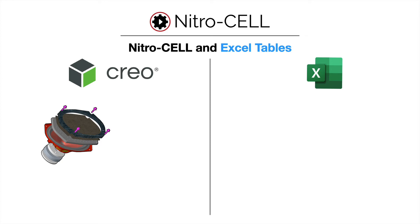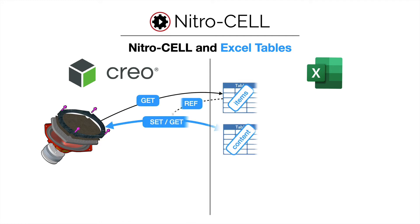Let's do a deep dive into automating Creo Parametric with NitroCell and Excel tables. NitroCell has the ability to read and write Excel tables natively, so you can retrieve information from Creo, write those out to a native Excel table, and then use that table as a reference for either setting information into Creo or getting information for additional content.